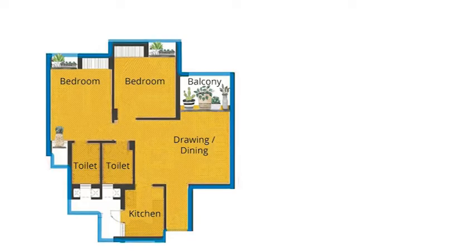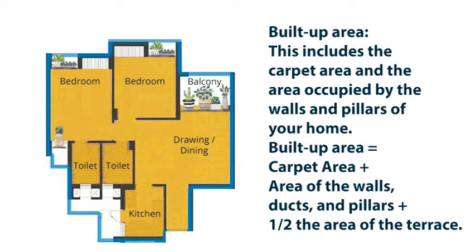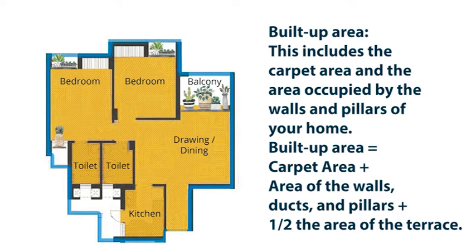Built Up Area includes the carpet area and the area occupied by the walls and pillars of the apartment. Built Up Area equals carpet area plus area of walls, ducts and pillars, and half of the area of the terrace. Built Up Area is usually 10% more than the carpet area. A terrace is considered half of the actual area for calculating the built up area.